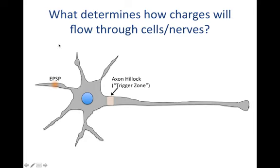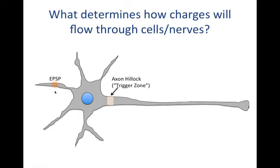Today, I want to talk specifically about what determines how charges will flow through cells or through nerves. We're looking at one neuron — you can see the dendrites, the cell body, the axon hillock or trigger zone, and the axon. We can think about really three ways that positive charge would flow through cells, so let's assume we're talking about excitatory postsynaptic potentials and the influx of positive charge. What happens once that positive charge enters the cell?